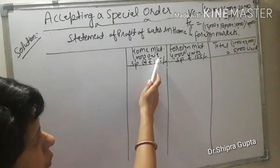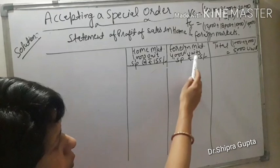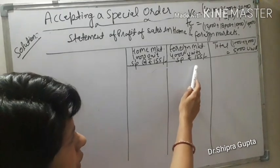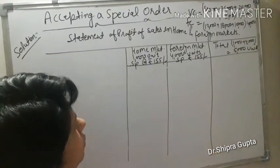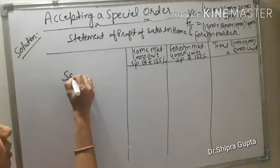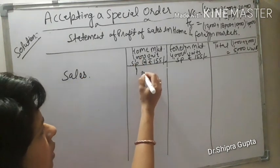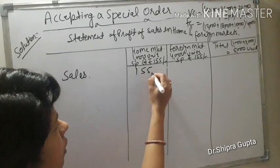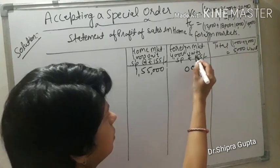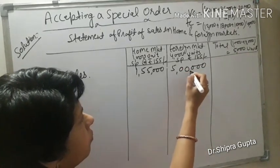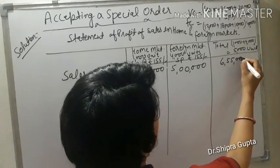Home market: 1000 units at selling price ₹155 per unit. Foreign market: 4000 units at selling price ₹125 per unit. Total combined: 5000 units (1000 plus 4000). Sales: home market 1000 units × ₹155 = ₹1,55,000; foreign market 4000 × ₹125 = ₹5,00,000; total sales = ₹6,55,000.